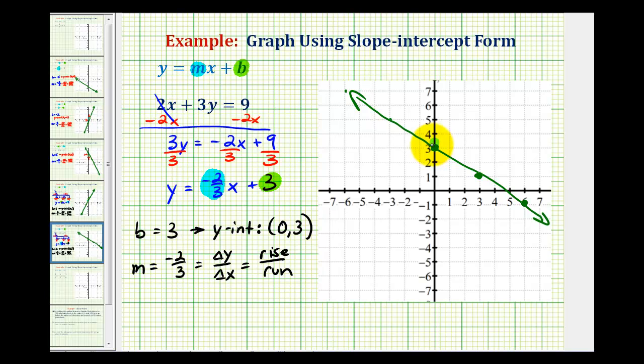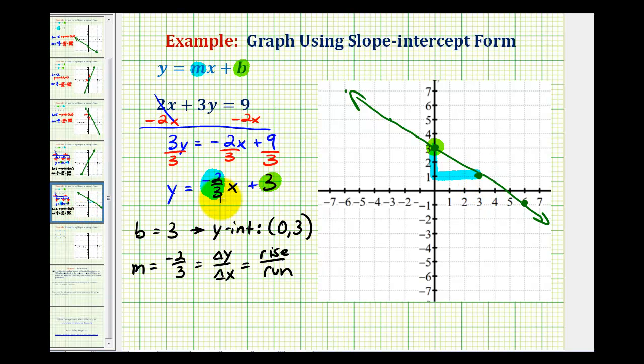Again, we had a y intercept of positive 3. And since the slope was negative 2/3rds, from the y intercept, we went down 2 units and right 3 units to determine another point on the line. We will take a look at one more example in the next video.